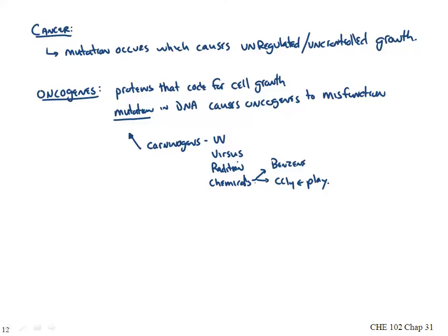We know there are lots of compounds in smoke, particularly cigarette smoke, that cause cancer, so smoking is bad for you. Carcinogens are fairly well regulated nowadays with labels and restrictions. What really happens is that carcinogens cause the oncogenes to either misregulate cell growth or lead to unregulated cell growth.